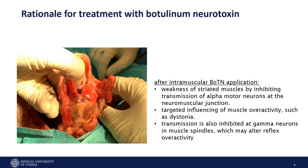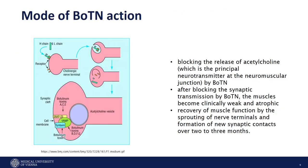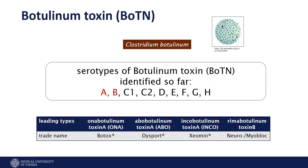Botulinum neurotoxin causes a weakness of the striated muscles by inhibiting the transmission of the alpha motor neurons at the neuromuscular junction. It can also inhibit the gamma neurons in the muscle spindles, which may reduce reflex overactivity. The botulinum neurotoxin blocks the release of acetylcholine at the muscles, blocking the neuromuscular junction. We use two types for human application: type A and type B. In most cases, type A is used; only if you have antibodies against type A do we use type B products.